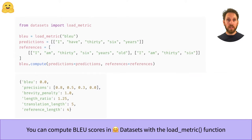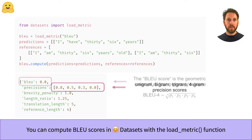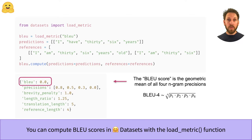Now to compute BLEU scores in the datasets library is really very simple — you just use the load_metric function, provide your model's predictions with their references, and you're good to go. The output will contain several fields of interest. The precisions field contains all the individual precision scores for each n-gram. The BLEU score itself is then calculated by taking the geometric mean of the precision scores, and by default the mean of all four n-gram precisions is reported — a metric that is sometimes called BLEU-4.